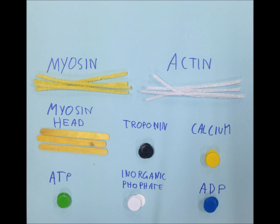Here we have the key eight pieces which allow a muscle to move: there are myosin, actin, the myosin heads, troponin, calcium, ATP, inorganic phosphate, and ADP.